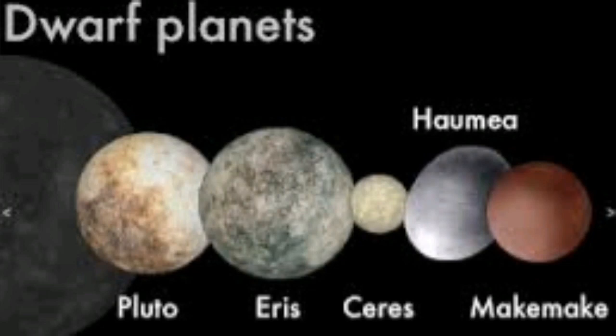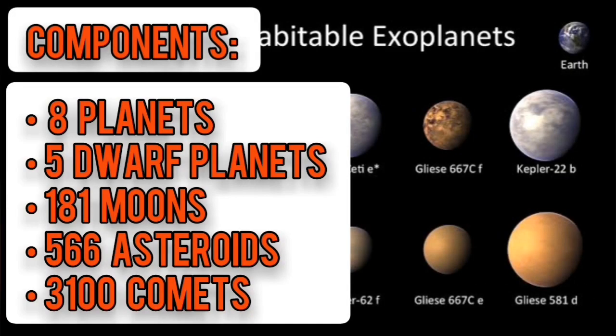Then we have five dwarf planets, which are Pluto, Eris, Haumea, Makemake, and Ceres. Also, there are 181 moons, 566 asteroids, and 3,100 comets.